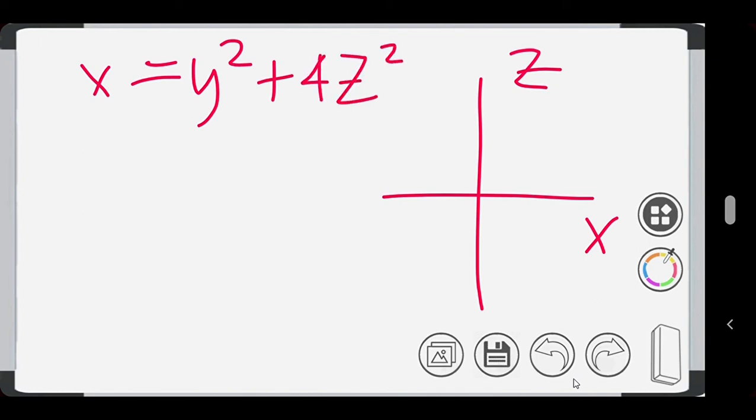Now let's examine the trace created by the equation in the xz plane. Setting y equal to 0, we have our equation x is equal to 4z squared, which shows, again, that our graph is a parabola.